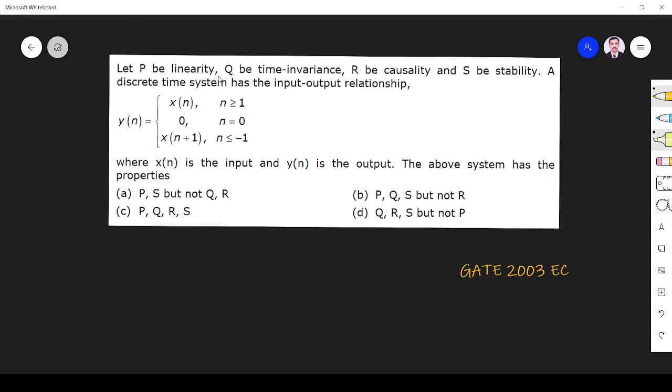The question is: Let P be linearity, Q be time invariance, R be causality, and S be stability. A discrete time system has the input-output relationship y(n) equals x(n) for n greater than or equal to 1, y(n) equals 0 for n equals 0, and y(n) equals x(n+1) for n less than or equal to minus 1, where x(n) is input and y(n) is output.